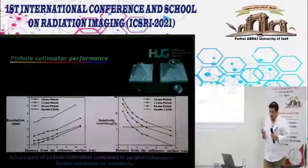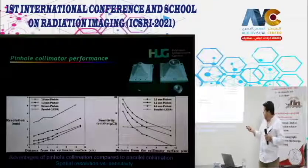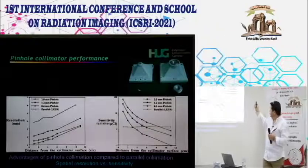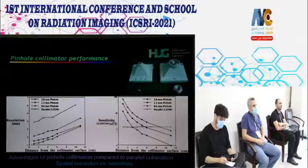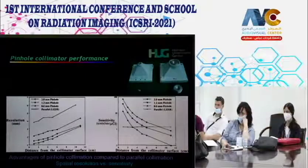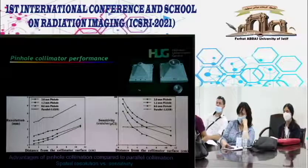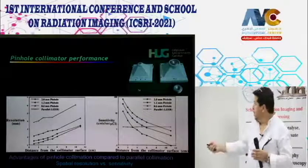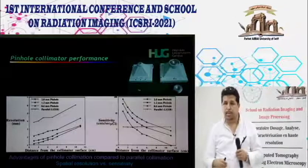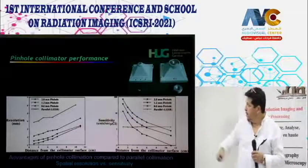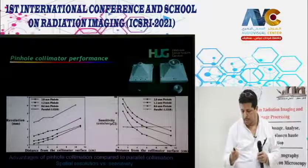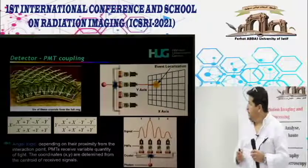Comparing collimator types: the pinhole's resolution varies with aperture diameter. The parallel collimator maintains constant sensitivity with distance (parallel geometry) but spatial resolution degrades with distance—the same trend applies to other collimators. You choose the appropriate collimator based on the required sensitivity and spatial resolution for your application.